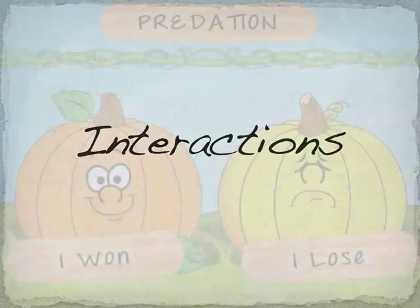Interactions between different species can be beneficial, detrimental, or a neutral experience for the different organisms involved. There are six types of interactions. Let's see what each of these interactions look like.